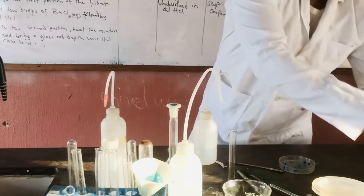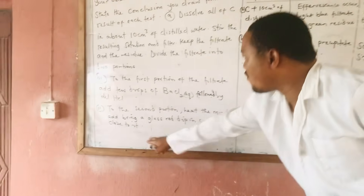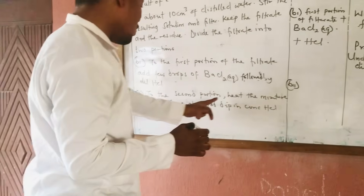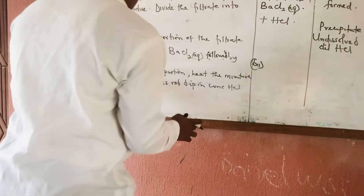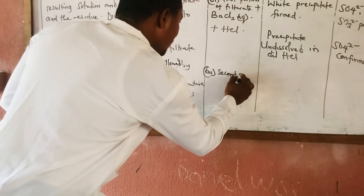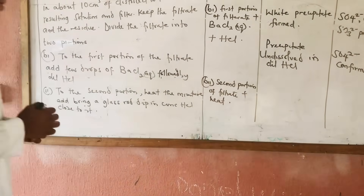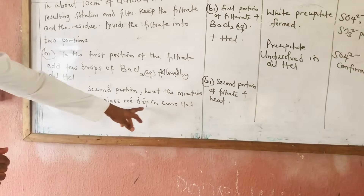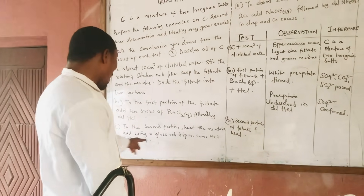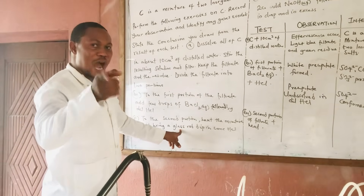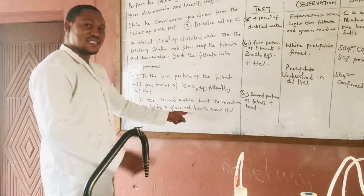Now for B, Roman numeral two: to the second portion of the filtrate, bring a glass rod dipped in concentrated HCl close to it. This is the confirmatory test for ammonia gas. When you bring a glass rod dipped in concentrated HCl close to the solution, if ammonia is being liberated you will see a white dense fume.